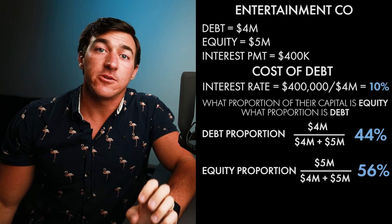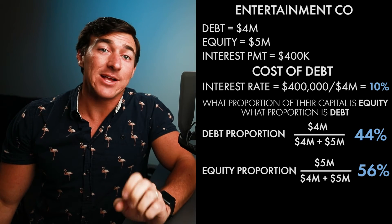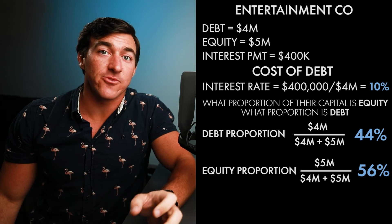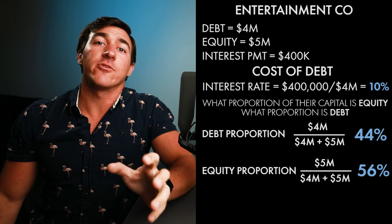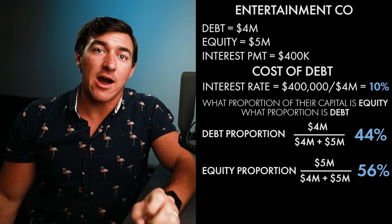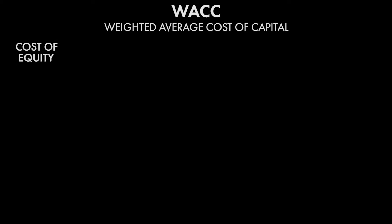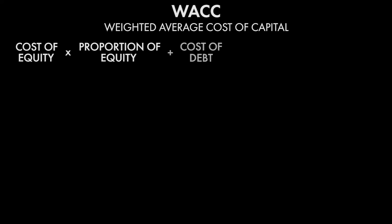Now we know everything we need to fully calculate WACC. WACC is equal to the cost of equity times the proportion of the capital that equity represents, plus the cost of debt times the proportion of debt in the capital structure times the tax shield. The only difference between the equity side and the debt side of the WACC equation is that the debt has that tax shield.